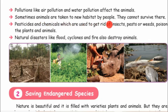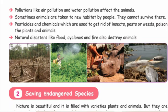Pesticides and chemicals used to get rid of insects, pests, or weeds poison the plants and animals. Natural disasters like flood, cyclone, and fire also destroy animals and forests. Here we can see images of a forest fire, pesticides, a hippo, water pollution, and another forest fire.